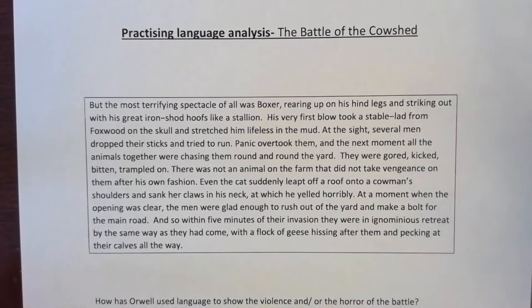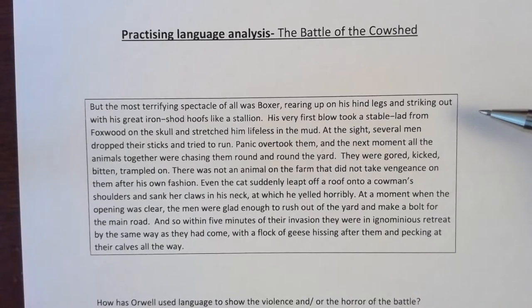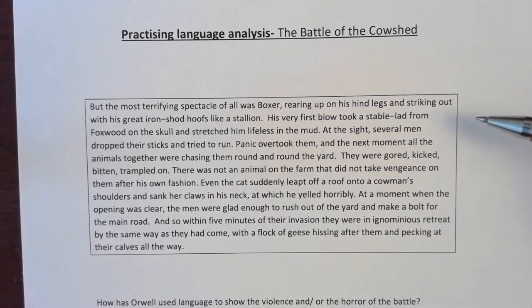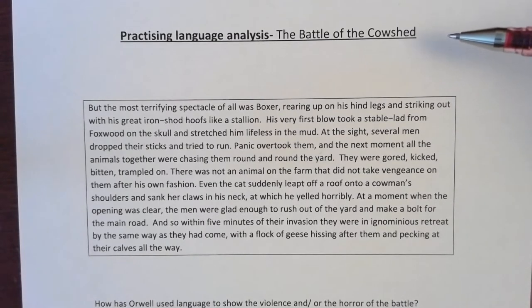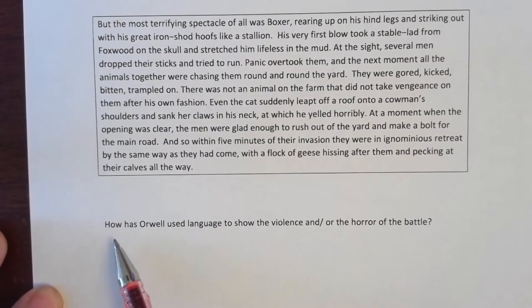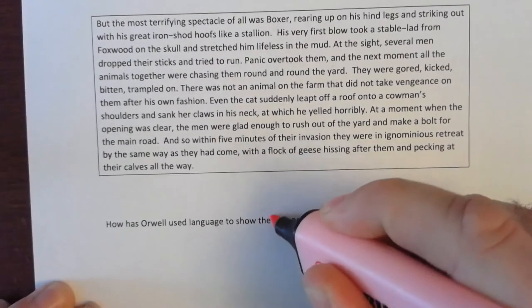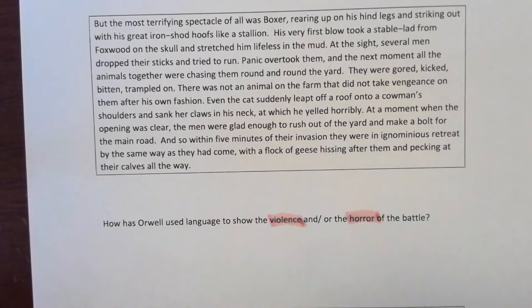Now this is an extract from Animal Farm, and when we read it you should recognise it's from Chapter Four — you'll know where in the novel it's from — and it's about the Battle of the Cowshed. When we give you a question, you'll have the extract and the question underneath, and the question says: how has Orwell used language to show the violence and/or the horror of the battle? The key words here are violence and horror, and that's really what I'm looking for.